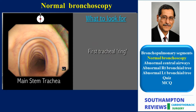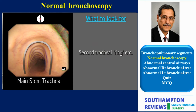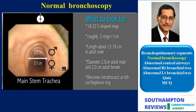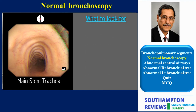The true trachea starts distal to the cricoid cartilage. The C-shaped tracheal rings are noted to dent the mucosa. In the adult there are 18 to 22 rings; roughly each two rings are equivalent to 1 cm, and the length of the trachea is about 12 to 18 cm in the adult male and shorter in the female. The adult male trachea has a diameter of 2.5 cm and the female a smaller diameter of 2 cm. This guide is useful when considering tracheal stent size.